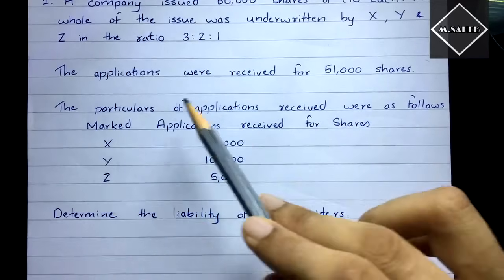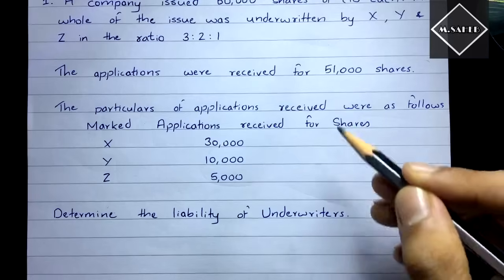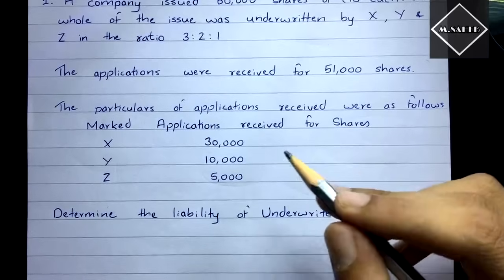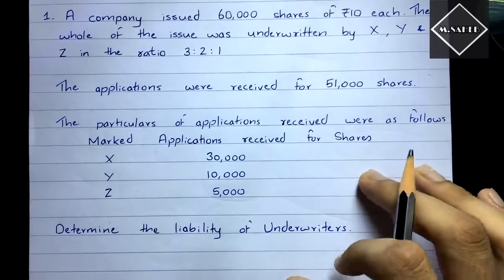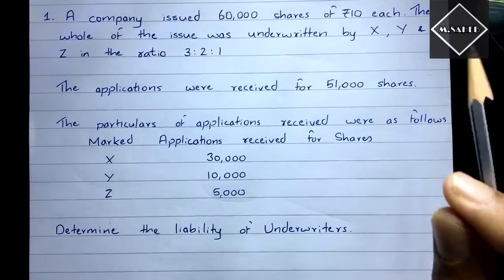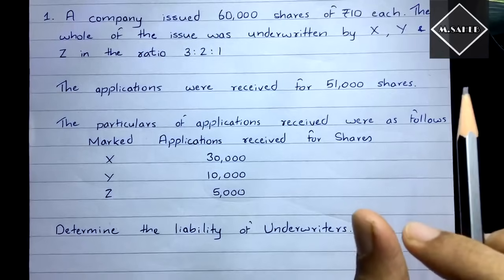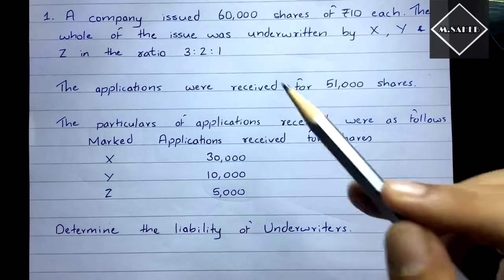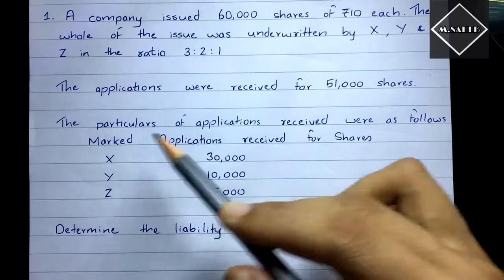Then it says: the particulars of applications received were as follows — marked applications received for shares. Marked applications are applications that have come through the underwriter. Each underwriter puts a mark or stamp on the applications — X's stamp, Y's stamp, Z's stamp — so the company can identify through which underwriter those applications came.